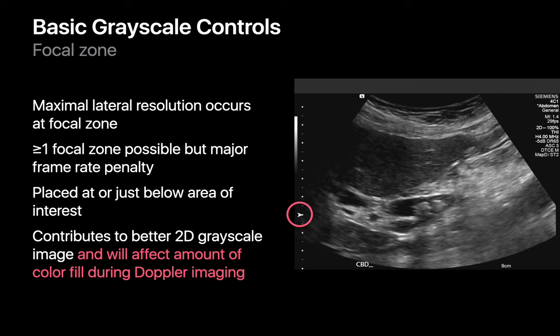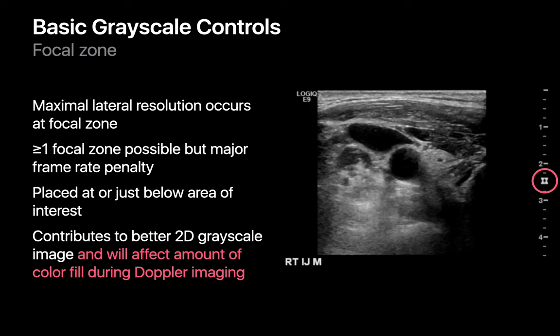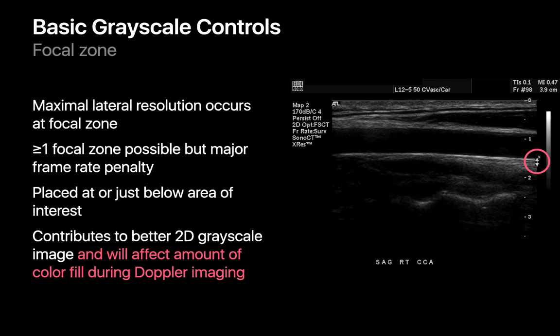Focal zones are a specific depth within an ultrasound image where the ultrasound waves are most tightly focused and where lateral spatial resolution will be the best. The focal zone location is indicated by an arrow along the depth markings on the side of the image. It's possible to set more than one focal zone, but this comes at a major frame rate penalty. The focal zone should be situated right at or just below the object of interest, as good placement also affects how good your Doppler imaging will be.